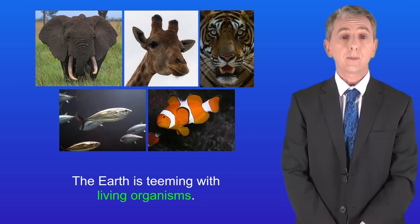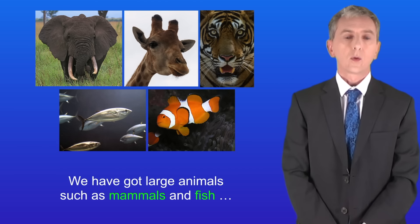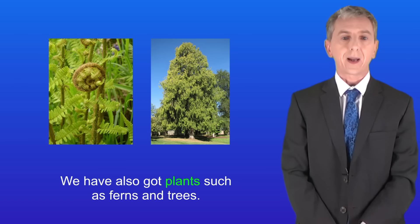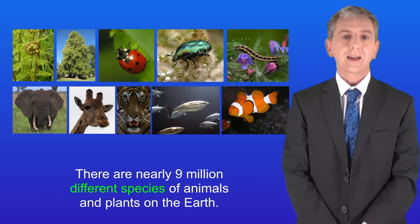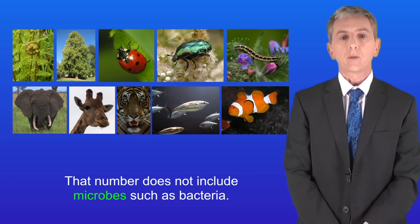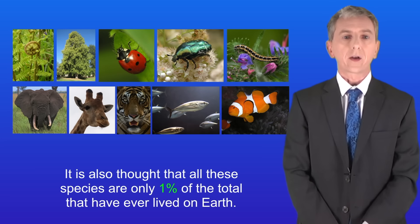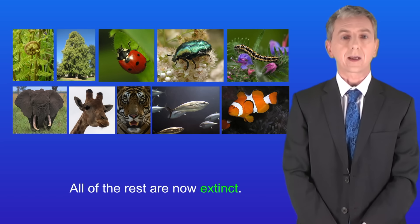The earth is teeming with living organisms. We've got large animals such as mammals and fish and smaller animals such as insects. We've also got plants such as ferns and trees. There are nearly nine million different species of animals and plants on the earth, and that number does not include microbes such as bacteria. It's also thought that all these species are only one percent of the total that have ever lived on earth.